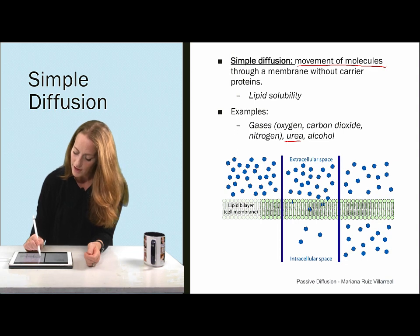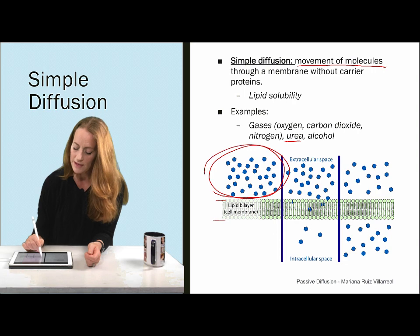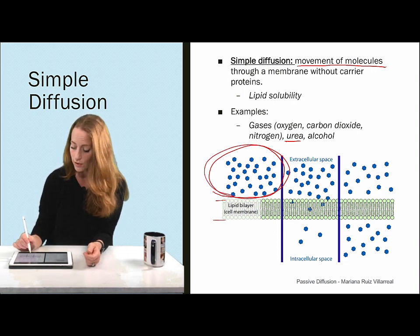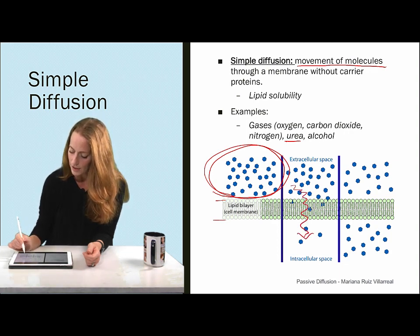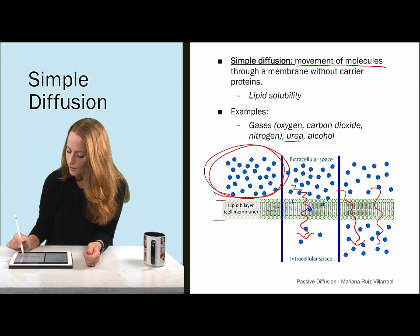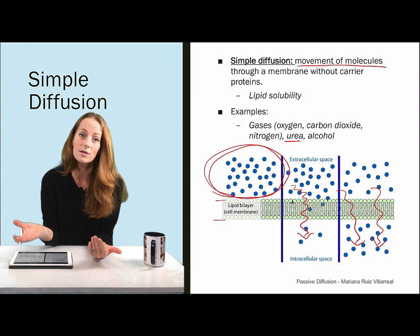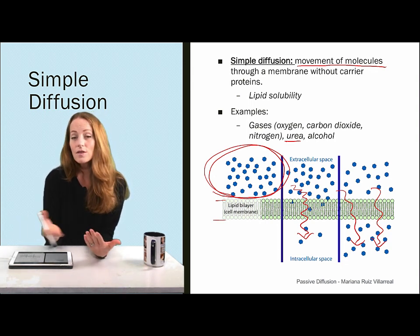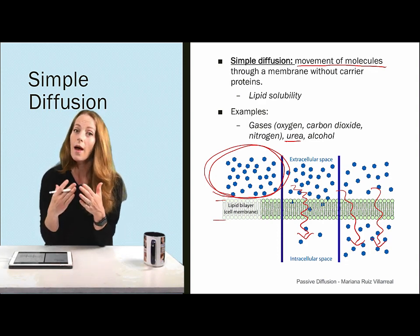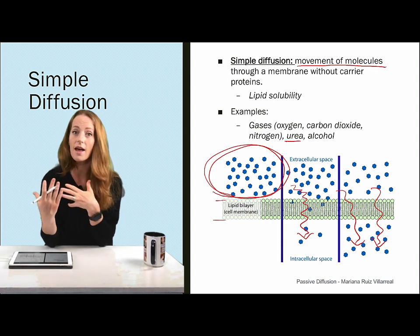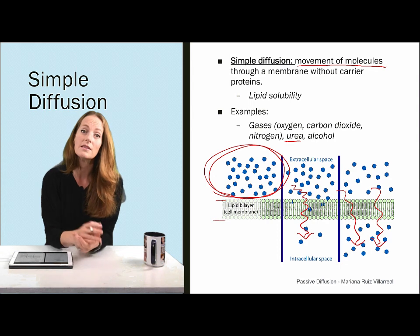Here's a diagram of a lipid bilayer where there's a high concentration of a particular molecule in the extracellular space. If this molecule can simply cross the membrane, over time those molecules will even out between the extracellular and intracellular space. It's able to diffuse back and forth and eventually, at equilibrium, will have equal concentrations on either side of the membrane.